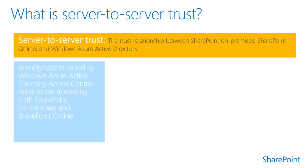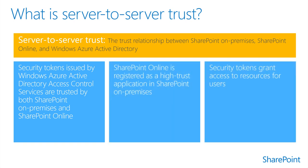Server-to-server authentication allows servers capable of server-to-server authentication to access and request resources from one another on behalf of users. Servers capable of this include those running SharePoint 2013, Exchange Server 2013, Lync Server 2013, Azure Workflow Service, or other software that supports the Microsoft Server-to-Server protocol. To provide the requested resources, the server running SharePoint Server 2013 must verify that the requesting server is trusted. To authenticate the requesting server, you must configure SharePoint 2013 to trust the server sending it requests. This is a one-way trust relationship.